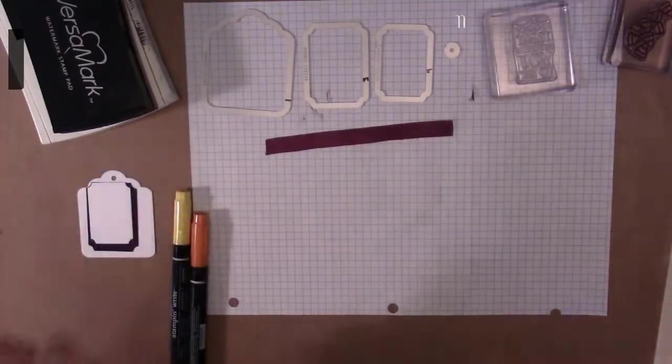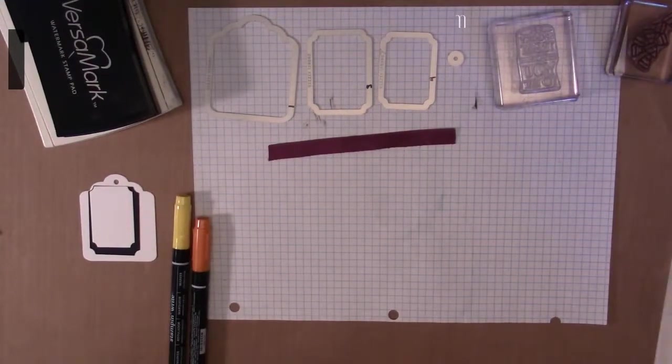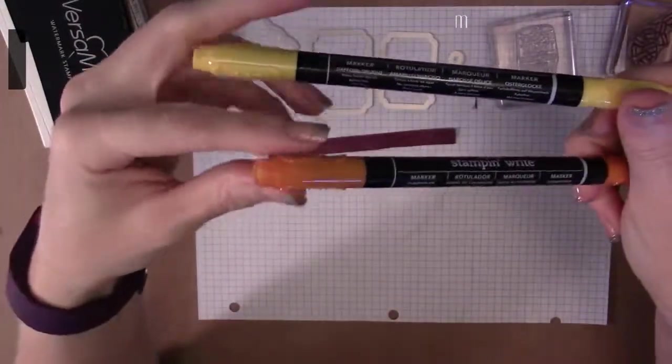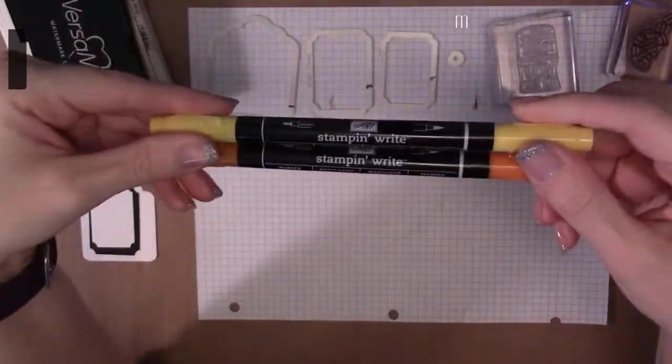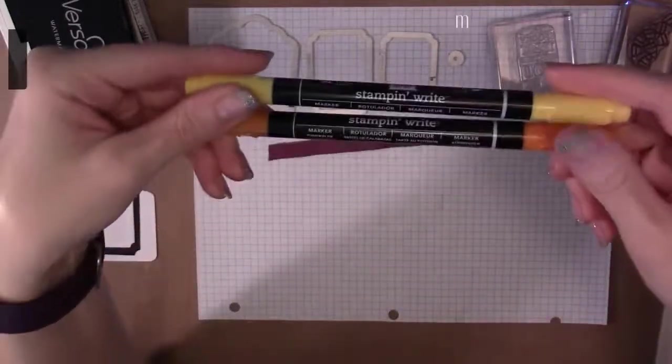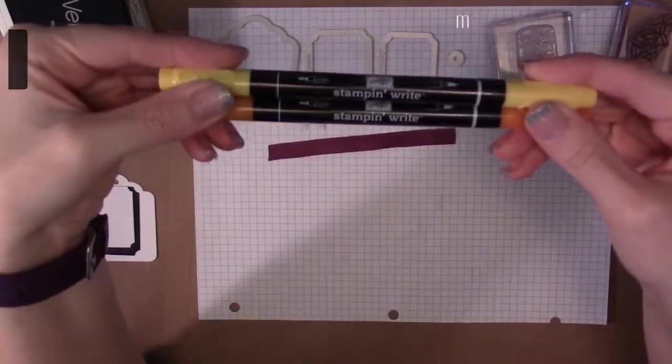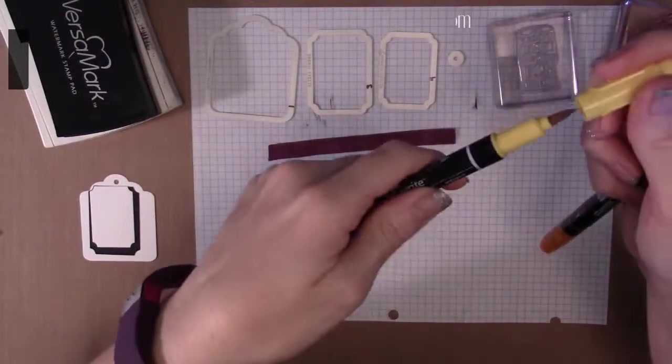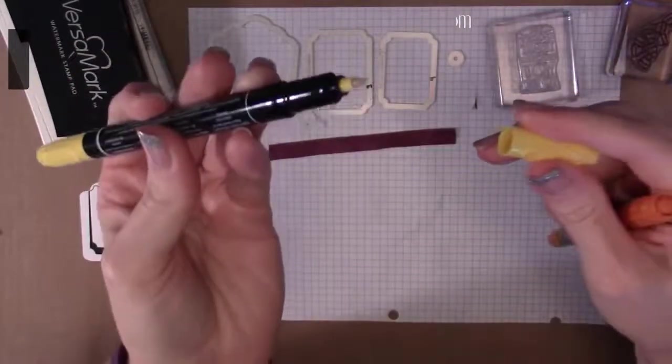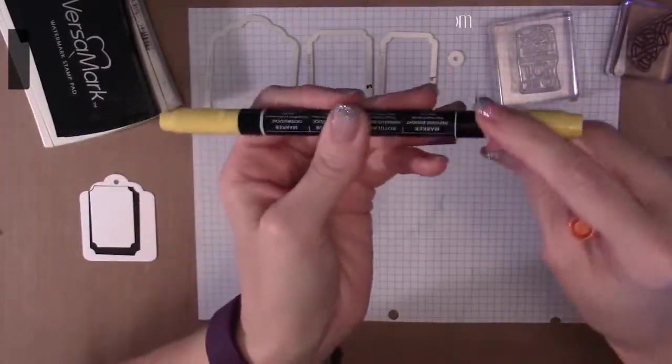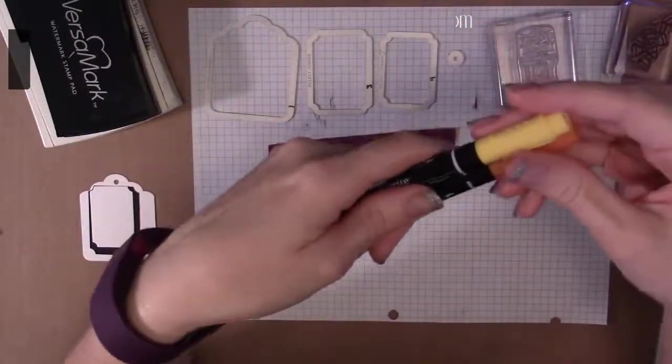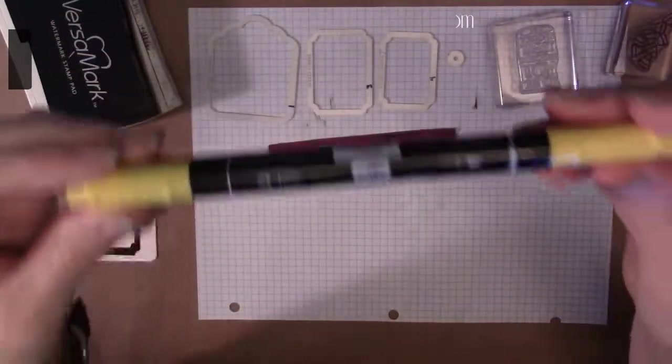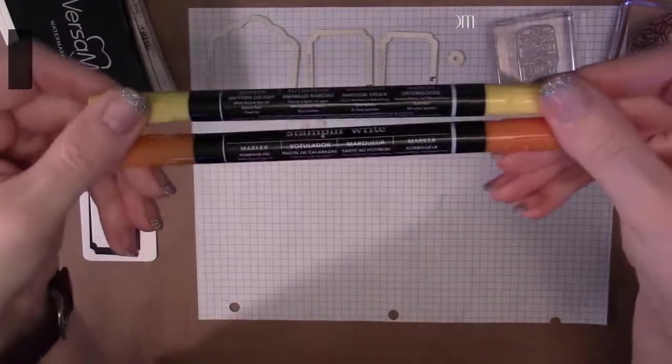Next we are going to need a Daffodil Delight and a Pumpkin Pie Stampin Write marker to color in the candy corn. I highly recommend these markers, they are fantastic. One end you've got your brush tip, the other end you got a writing tip so you can write with them, you can color with them, they're very versatile. You can stamp with these. They're really great, you're not going to regret buying the entire Marvelous Markers set or whatever it's called.